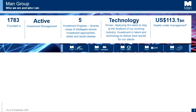By way of introduction, if you haven't heard of us: Man Group are an active investment management company. We were founded in 1783 by James Mann, and in our current structure we're made up of five investment engines — IAHL, Numeric, GLG, GPM, and FRM. We cover a diverse range of investment strategies including private markets and algorithmic trading, and we are a very technology-driven firm. Currently assets under management are around 113 billion USD.